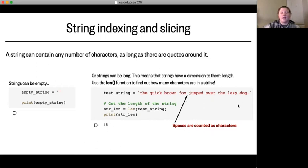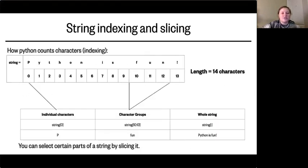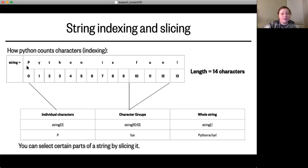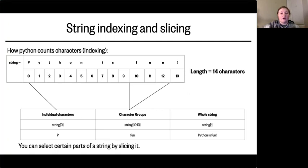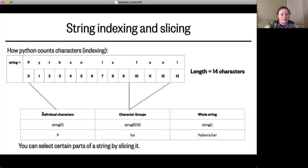Notice that spaces are counted as characters, and so is punctuation. Python assigns an index to each character in a string starting with zero. So for the string 'python is fun!' it assigns index values of zero, one, two, three, four, all the way up to 13. Because it starts at zero, there are 14 characters. You can select an individual character by using your string variable name followed by square brackets containing the index number — for example, `string[0]` gives you the capital P of 'python'.